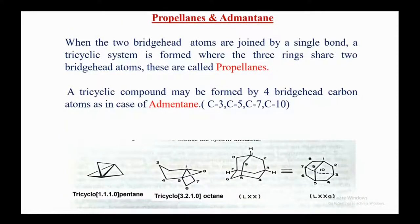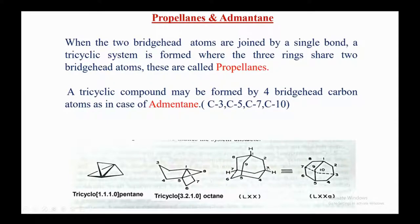Propellanes are formed when two bridgehead atoms are joined by a single bond, creating a tricyclic system where three rings share two bridgehead atoms. Adamantane is a tricyclic compound formed by four bridgehead carbon atoms. This concludes the conformational analysis of cis- and trans-decalin and other systems including bridged compounds — norbornane, bornane, camphane, adamantane, and propellanes. Thank you for watching; please subscribe and have a good day.